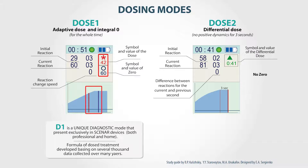The zero parameter is indicated by the blue symbol. It means that the reaction change speed fell less than 1% per second. The number below the zero symbol is the value of reaction at the moment when the zero was reached. On the graph, dose and zero are indicated by vertical lines.